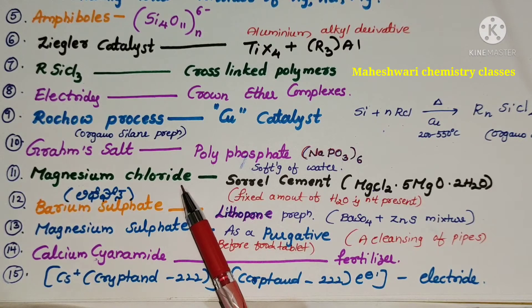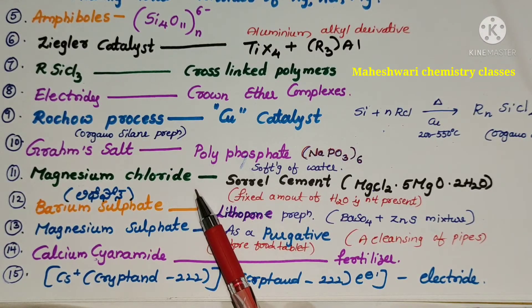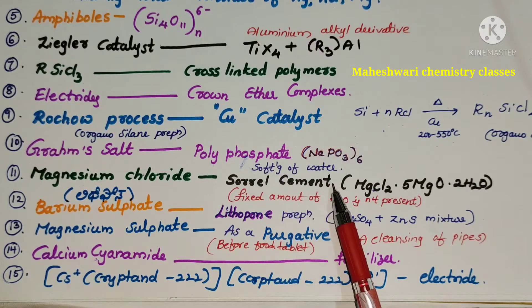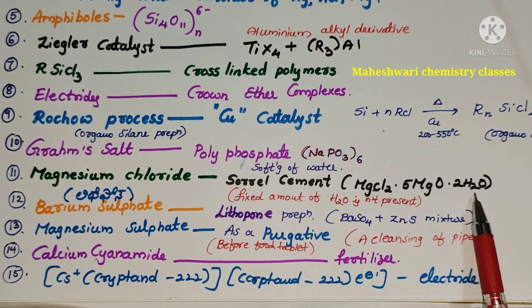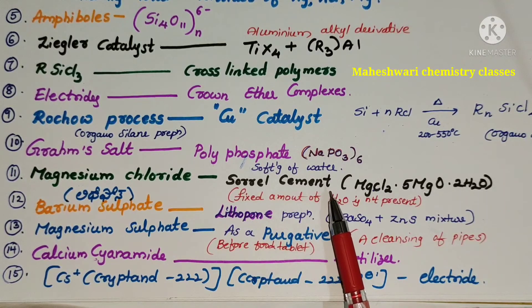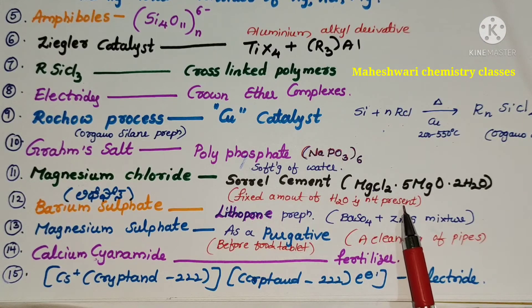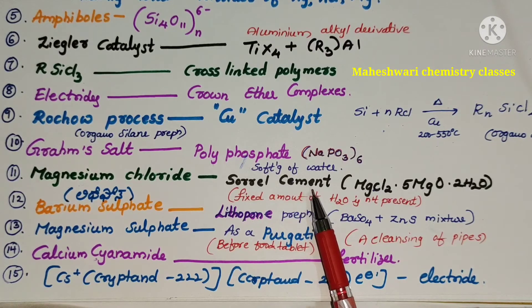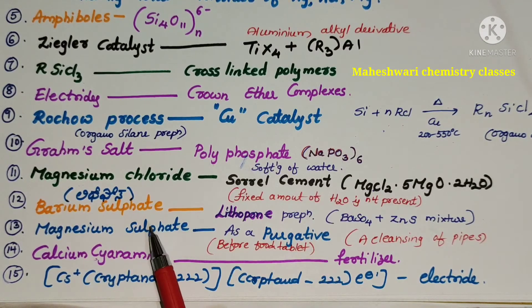Magnesium chloride. This magnesium chloride is utilized in Sorel cement. That is nothing but MgCl2, MgO, water mixture is called Sorel cement. Here fixed amount of water is not present in that Sorel cement. This is the specific character of that Sorel cement.